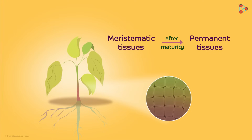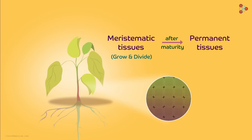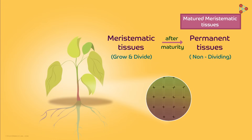Did you understand what this means? It means both the meristematic tissues and permanent tissues are one and the same. When tissues grow and divide, they are known as meristematic tissues. And when they finally mature and divide no more, they become permanent tissues. So permanent tissues are nothing but matured meristematic tissues.